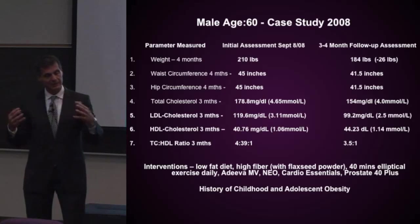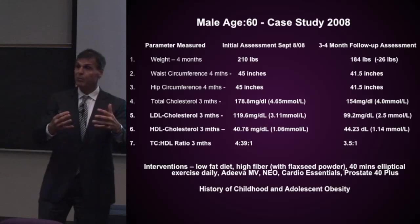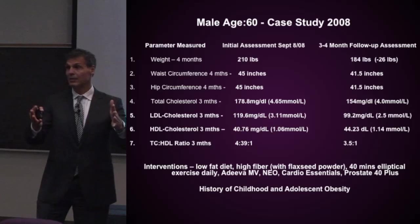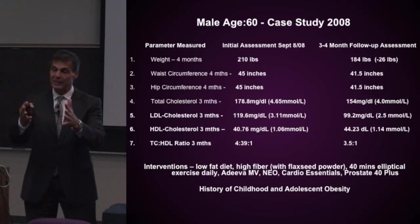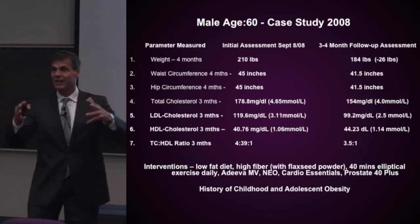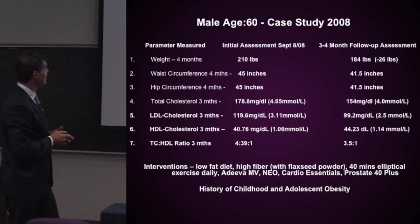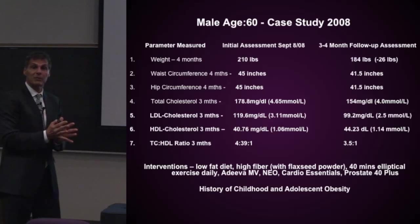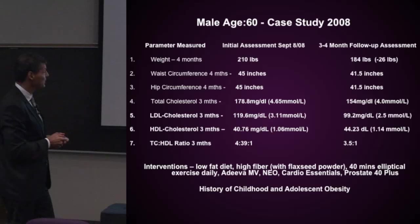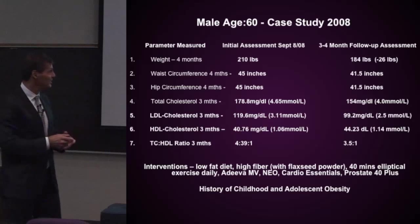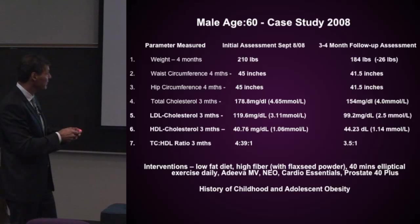He did my standard assessment. I looked at his diet and said, we need to get the animal fats out, we need to improve the types of carbs you're eating, I don't want you to starve, and I need you to exercise a little bit more. Look at this guy — in just three to four months, he goes from 210 pounds down to 184, losing 26 pounds. His waist goes from 45 inches down to 41.5. His hip goes from 45 to 41.5. His total cholesterol goes from 4.65 down to 4.0 — he's almost under 3.9 now — just three months later.